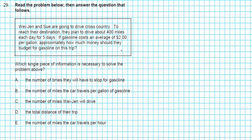Let's take a look at question 29. It says Wei-Yen and Sue are going to drive cross-country. To reach their destination, they plan to drive about 400 miles each day for five days. If gasoline costs an average of $2 per gallon, approximately how much money should they budget for gasoline on this trip? Question: which single piece of information is necessary to solve the problem? If you're going on a trip, how do you know how much money you're going to spend on gasoline?